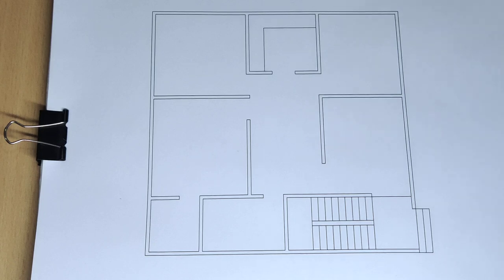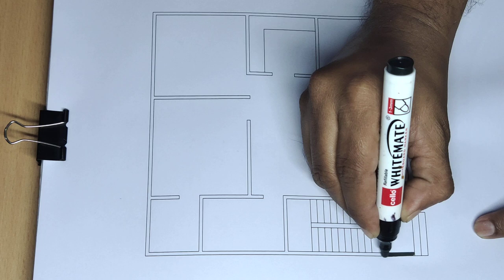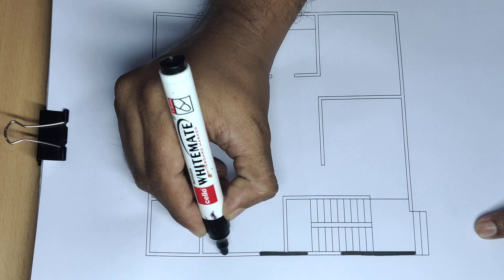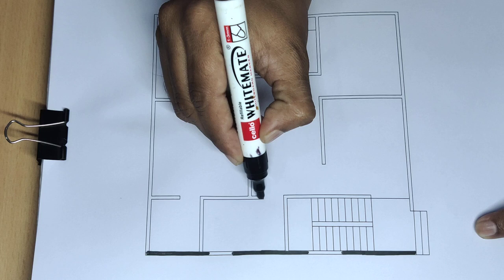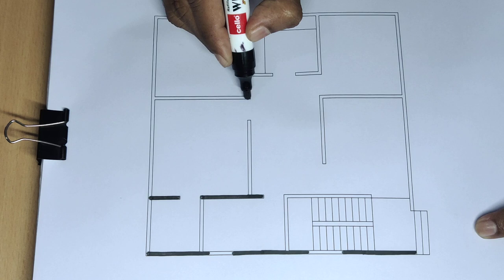This is a 3BHK house plan. This outside wall is 125mm, and this partition wall is also 125mm.